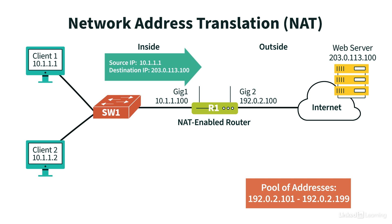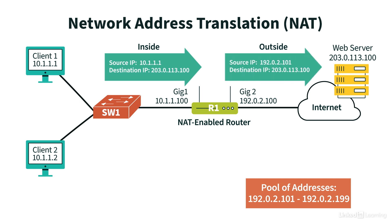Notice that Client1 has a private IP address of 10.1.1.1 — that's not routable on the public internet. Fortunately, Router R1 is configured for NAT. It's going to take Client1's private IP address of 10.1.1.1 and translate that into the publicly routable IP address from that pool, which in this case is 192.0.2.101. Then when the return traffic comes back from the web server, when Router R1 sees incoming traffic destined for 192.0.2.101, it knows that needs to be forwarded to Client1 because Router R1 maintains a translation table that has all of the NAT mappings.